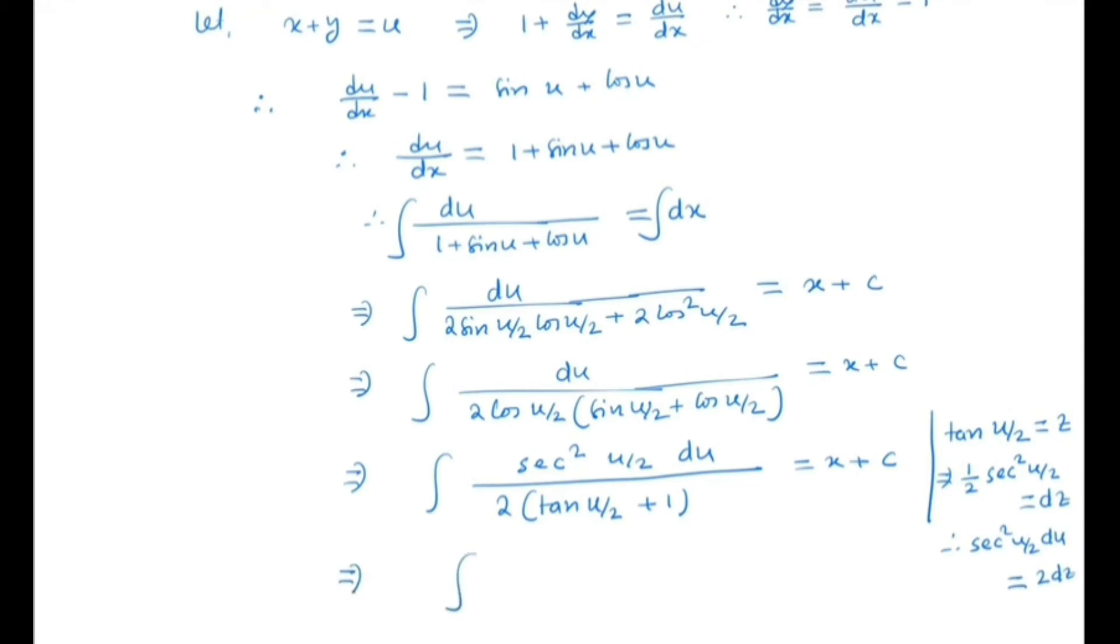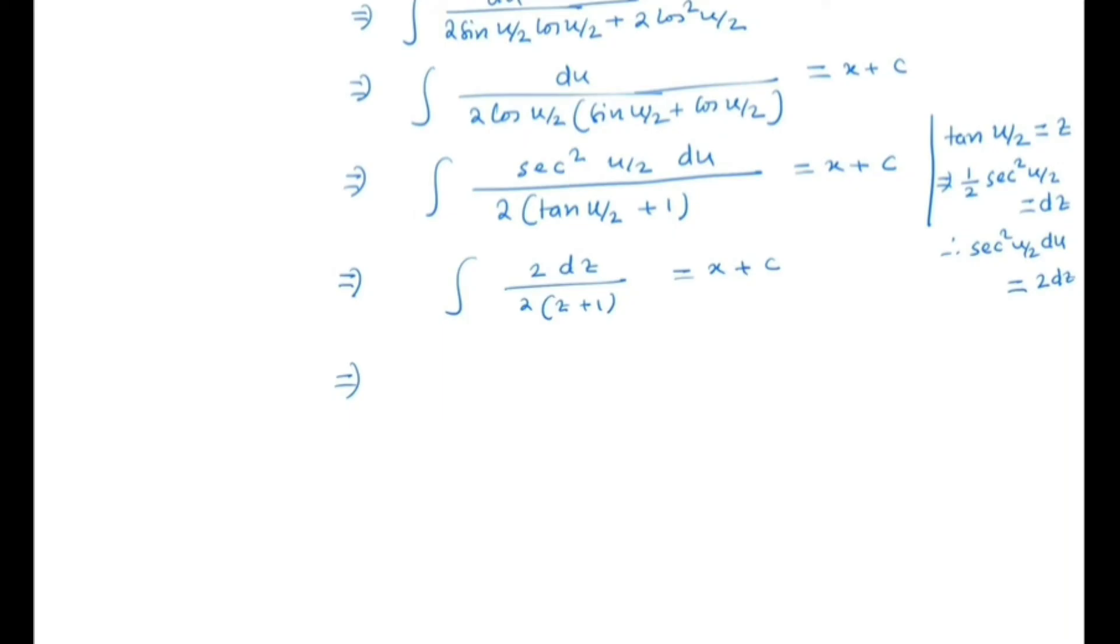By substituting, we get 2dz by 2 times z plus 1 is equal to x plus c. So it will be dz by z plus 1. So ln(z+1) is equal to x plus c. Now what is z? z is nothing but tan(u/2). And by putting the value of u, we get our required solution, which is ln of tan((x+y)/2) plus 1 is equal to x plus c.